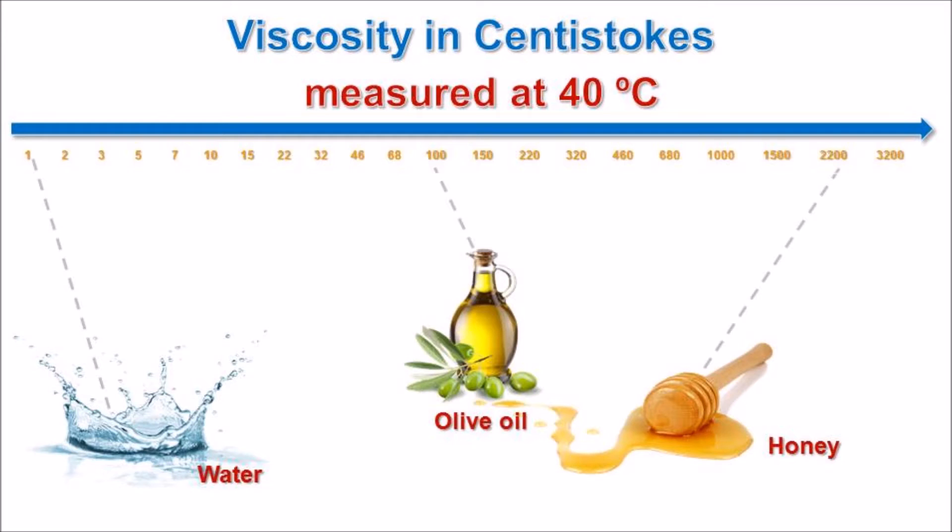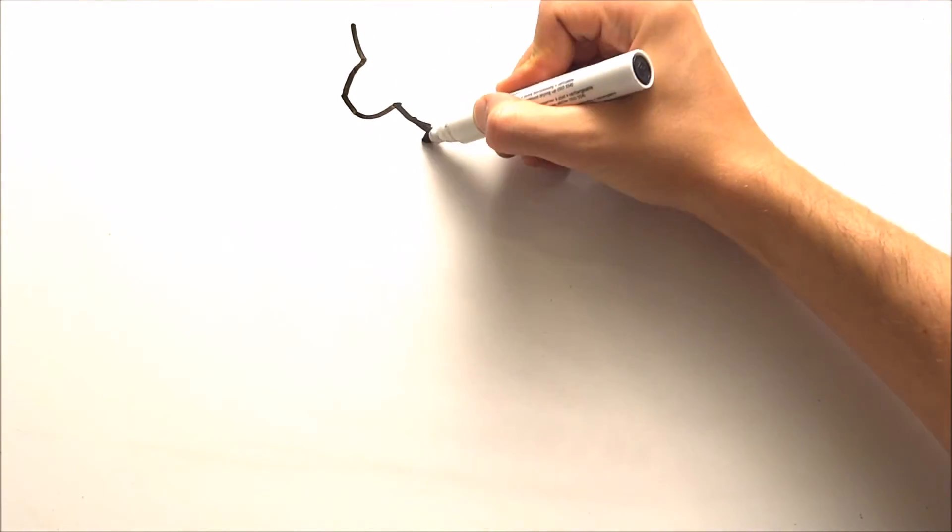Here are the viscosities of the three different fluids we have been talking about. Water is the reference. It has a viscosity of 1 centi-stoke. The viscosity of olive oil is around 100 centi-stokes and for honey, 200 to 1000 centi-stokes. Of course it depends on the type of olive oil and honey. These values are just averages.